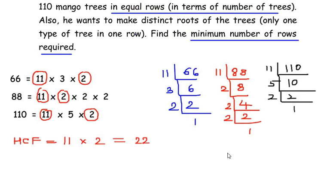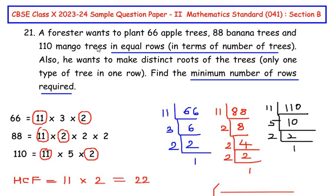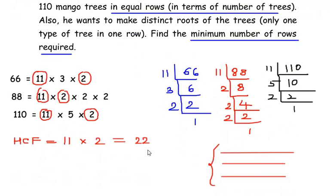Which means in each row there have to be maximum of 22 trees. Now let us see how many rows are required. Now to find out how many rows are required we are going to add the total number of trees and just divide it by the HCF.